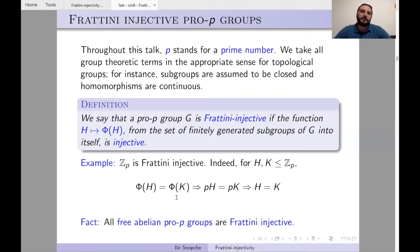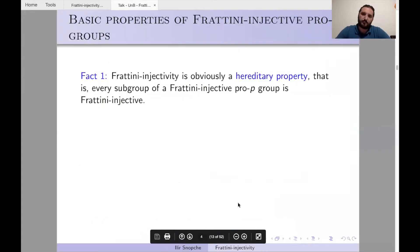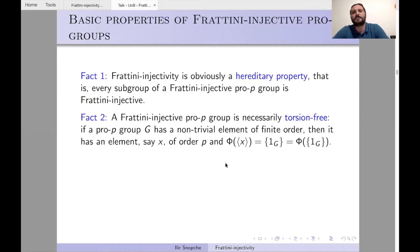Let us discuss some basic properties of Frattini-injective pro-p groups. First, Frattini-injectivity is a hereditary property — every subgroup of a Frattini-injective pro-p group is Frattini-injective. Second, Frattini-injective pro-p groups are necessarily torsion-free. That is why among finite groups we cannot find non-trivial Frattini-injective groups.